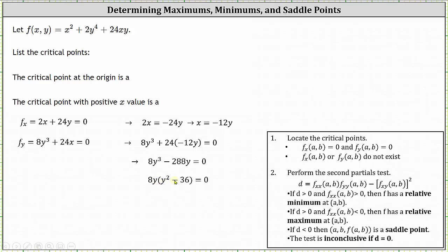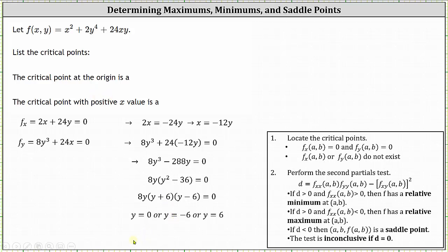Notice y squared minus 36 is a difference of squares. In factored form we have 8y times the quantity y plus six times the quantity y minus six equals zero. This gives us three solutions: y equals zero, y equals negative six, or y equals positive six. We're looking for critical points in the form x comma y, so we find the corresponding x value for each y value using the equation x equals negative 12y.